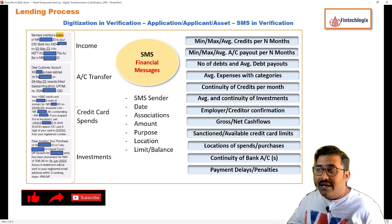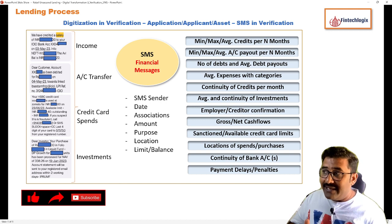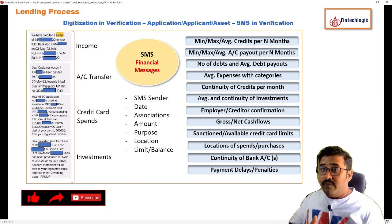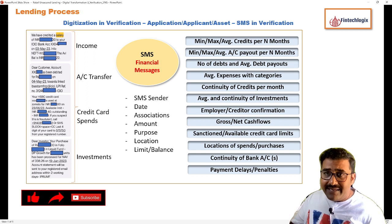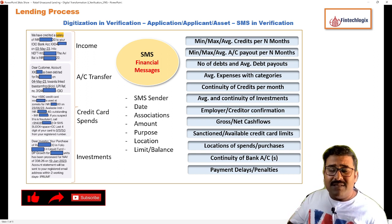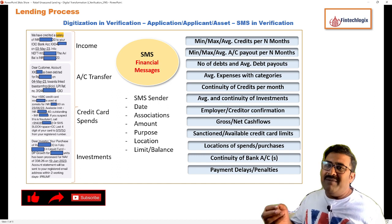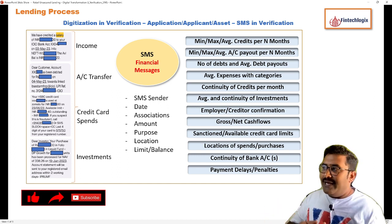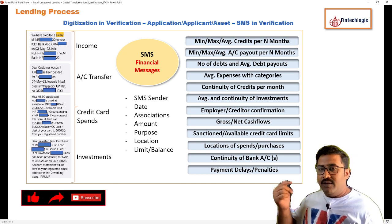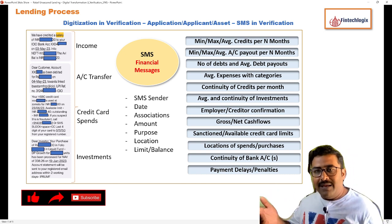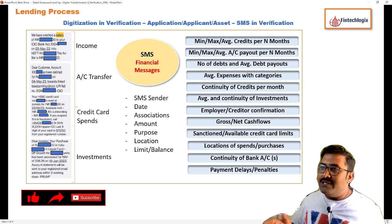One important caveat: all this is good only if the customer's SMS is present on the mobile device. If the customer has changed their phone and data was not synced, a lot of SMS is lost. Sometimes customers also delete SMSs they don't need. In those cases, we may not get a correct picture. That is why SMS is still taken as alternative data for underwriting and not the primary source — primary underwriting still depends on credit bureau data, and SMS data is used for enrichment purposes.